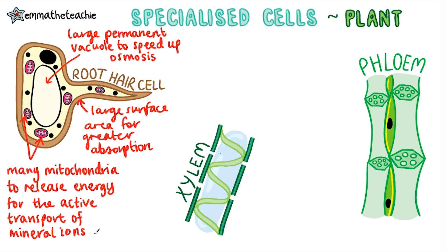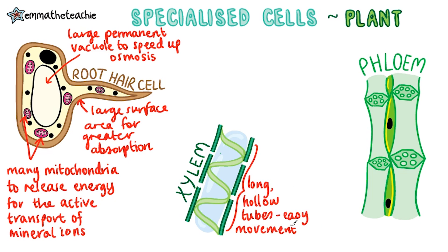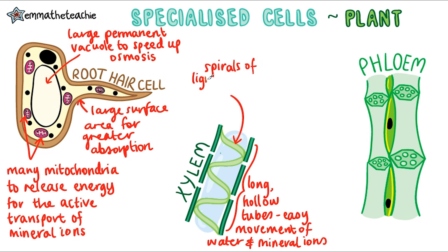Next up, we've got the xylem. These cells are responsible for the movement of water and mineral ions up from the roots through the rest of the plant. What can you see that would help them do this? Well, you can see that they form long hollow tubes, so the cell walls have been removed, which allows the easy movement of water and mineral ions through them. They also have spirals of lignin. This allows it to strengthen the cells to withstand the pressure of the water moving through it, and it also supports the plant as it doesn't have a skeleton.